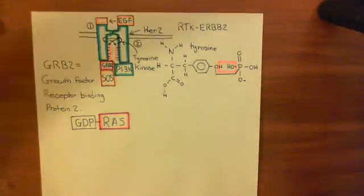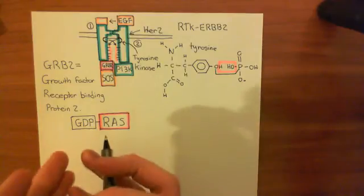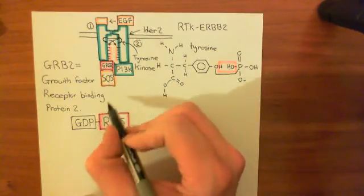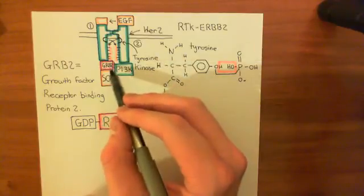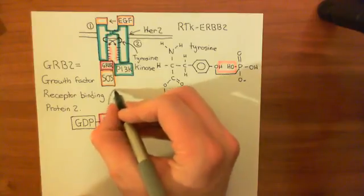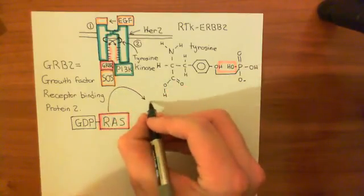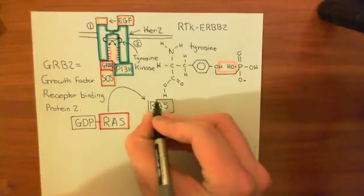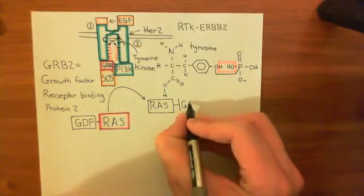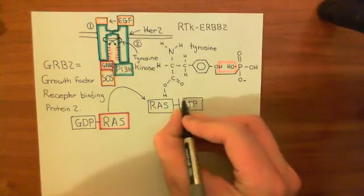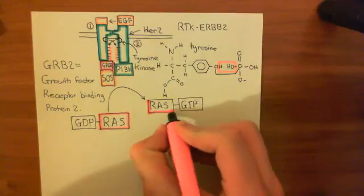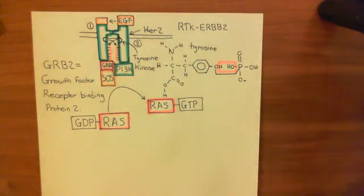SOS, once activated by binding to GRB2, catalyzes the conversion of RAS-GDP into RAS-GTP. Basically, it chops off the GDP from the RAS protein and binds guanosine triphosphate to the RAS instead — converting the off-state RAS, where it has GDP bound, into the on-state RAS, where it has GTP bound. So it turns the RAS protein on.